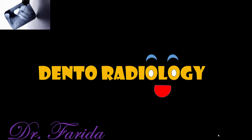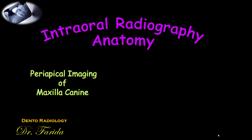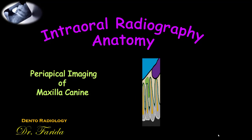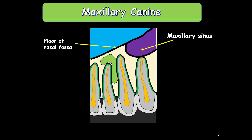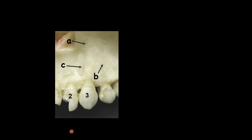Hi everyone, this is Freda and welcome to dental radiology. Let's continue the intraoral radiography anatomy — practical imaging of the maxillary canine, and what we see in the practical radiograph of the maxillary canine: the floor of the nasal fossa, the maxillary sinus and its floor, and the lateral fossa. Now let's see the facial view of the maxillary bone.